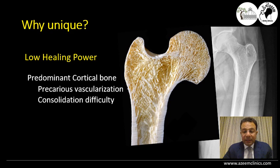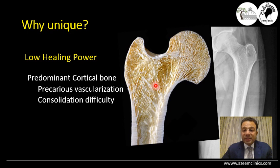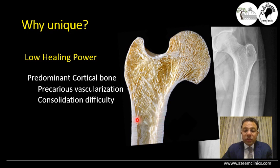It also has a special biological consideration. Besides having mechanical considerations, it has a very low healing power as compared with the trochanteric region. If we look at the trochanteric region, it is highly vascular with high porosity, full of cancellous bone, which is liable to rapid remodeling and healing. However, below this area lies the cortical bone, which has low vascularity and low porosity, and it takes a long time for healing as well as having difficulty in consolidation.